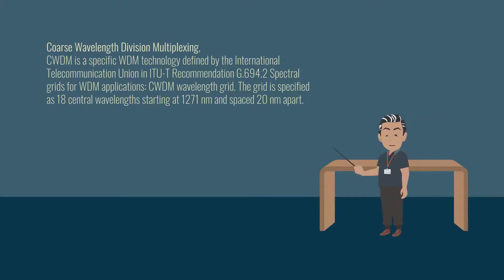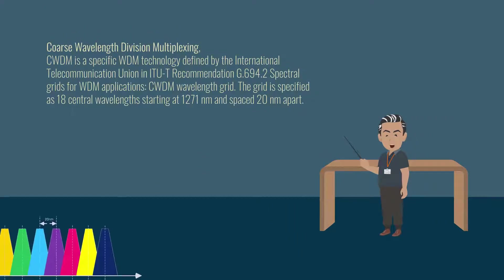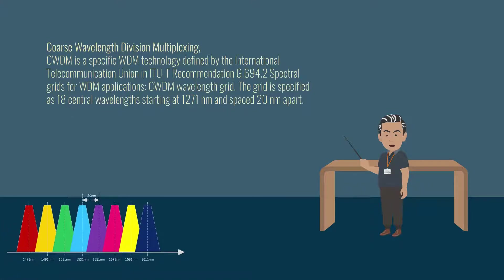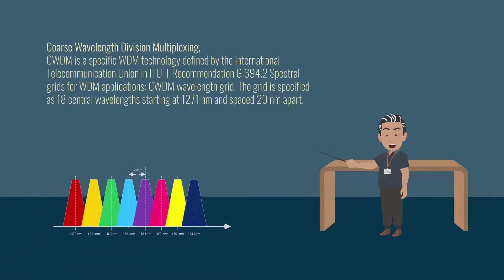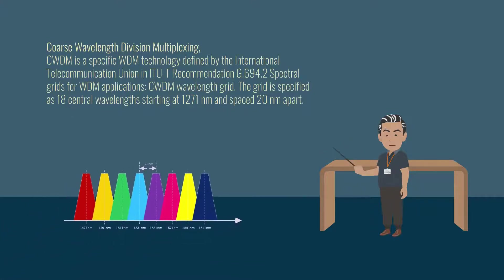CWDM wavelength grid is specified as 18 central wavelengths starting at 1271 nanometers and spaced 20 nanometers apart.